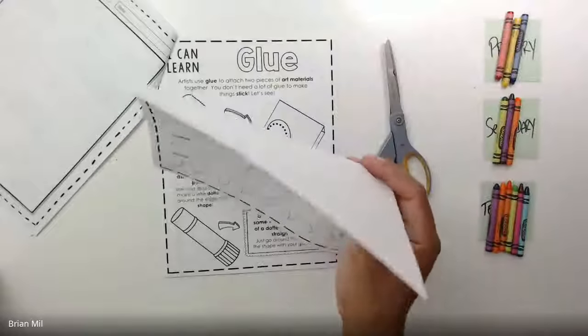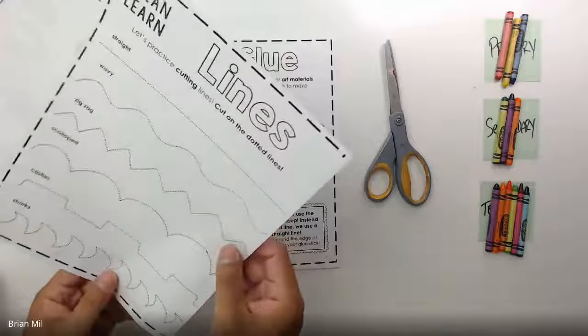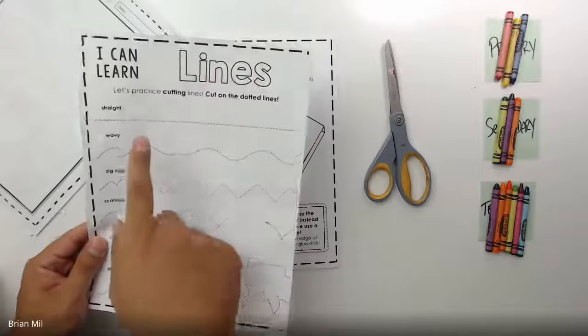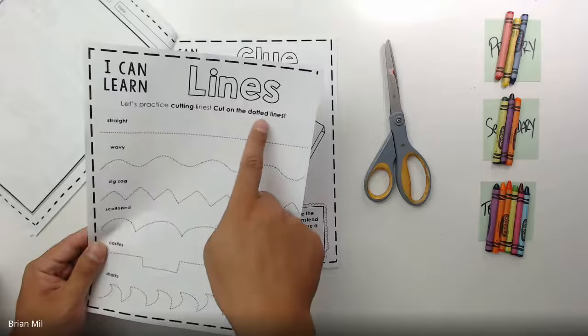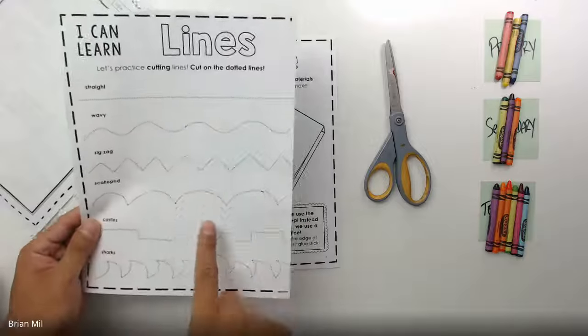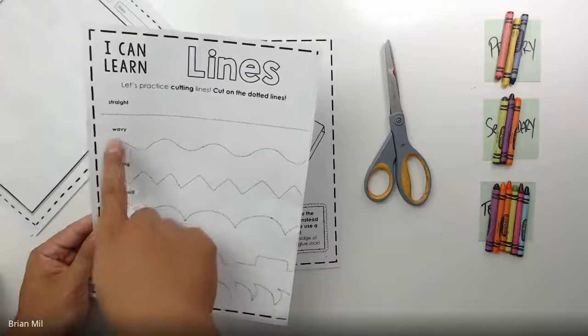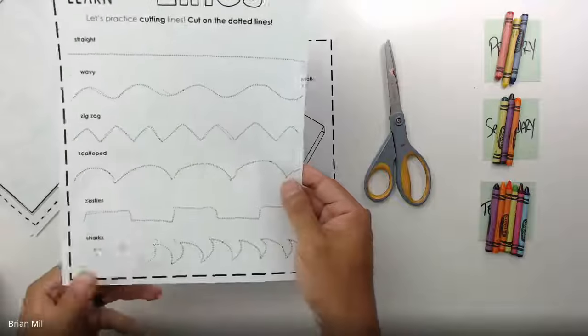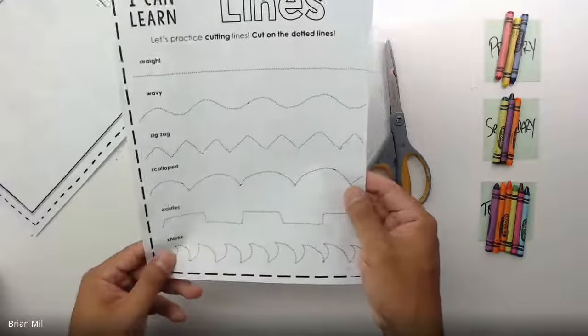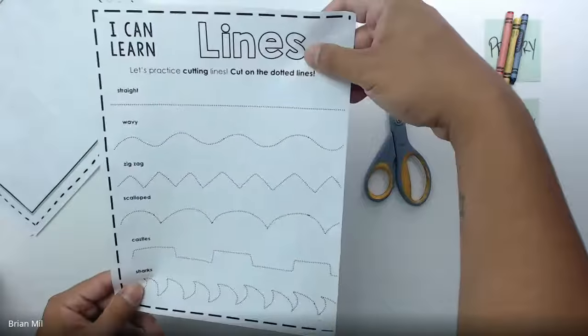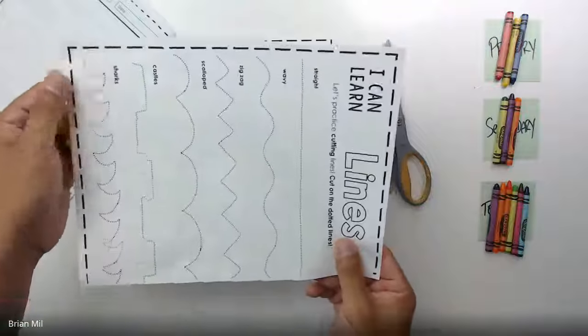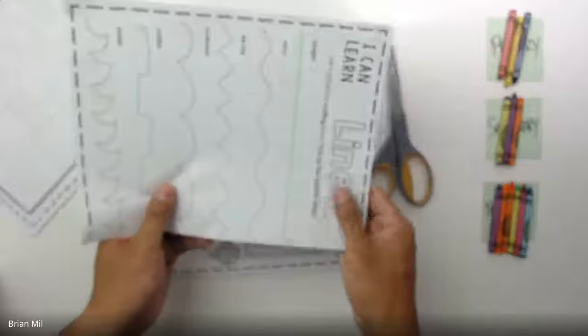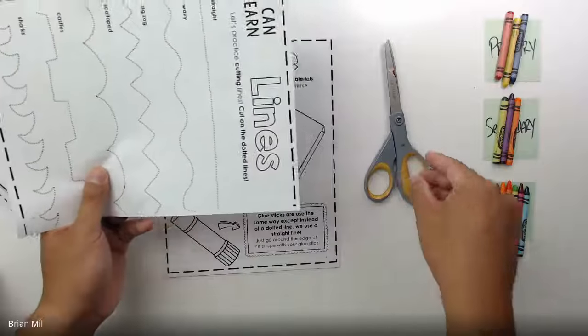I'm just typing out the directions in case people have trouble with the audio. Next step, we're going to make sure we understand the directions. It says: I can learn lines, let's practice cutting the lines by cutting on the dotted lines. These are all different types of dotted lines: straight dotted lines, wavy dotted lines, and so on. We don't want to hold the paper like this at a weird angle. The best way to hold it is if you turn your paper horizontally.